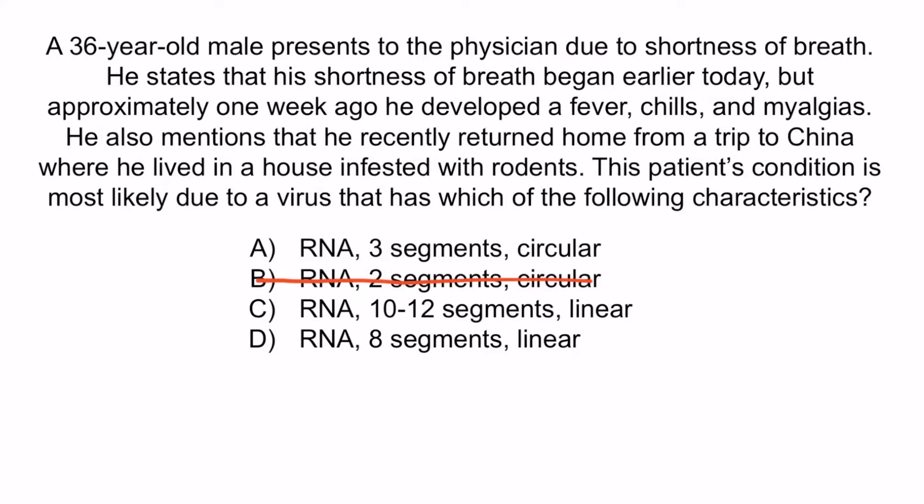C is referring to reoviruses. However, these cause gastrointestinal symptoms and are not associated with rodent exposure, so C is incorrect. Finally, D is referring to influenza virus, which can cause pulmonary symptoms, but doesn't fit very well considering that this patient just visited China and was exposed to rodents. So D is incorrect.